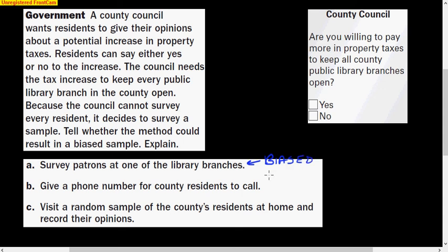Letter B, give a phone number for county residents to call. This would be a self-selected sample, and usually with self-selected, that is going to be biased as well. Because usually you're going to get people who either they're really for it or they're really against it. Letter C, visit a random sample of the county's residents at home and record their opinions. This, to me, out of the three would be the most unbiased.